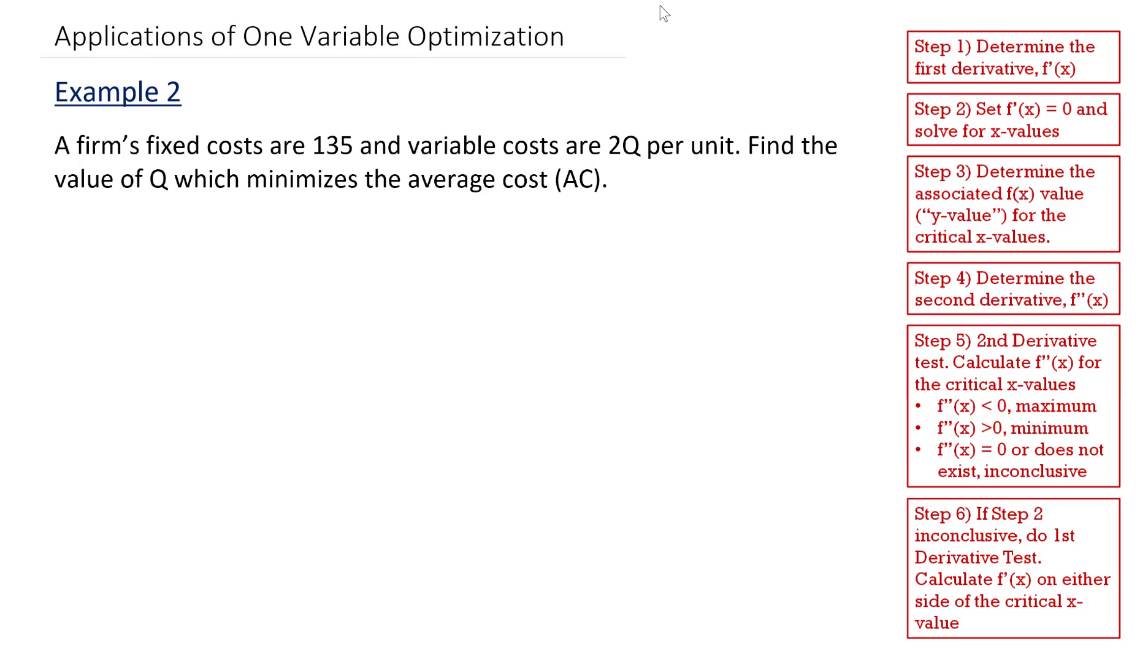So we have one more example before you get into your knowledge checks. Example two: a firm's fixed costs are 135 and the variable costs are 2Q per unit. Find the value of Q which minimizes the average cost.